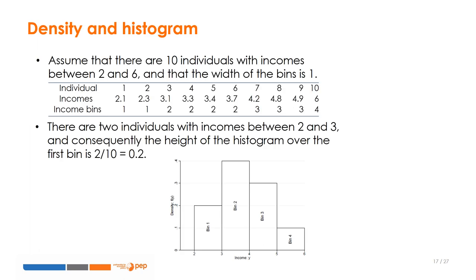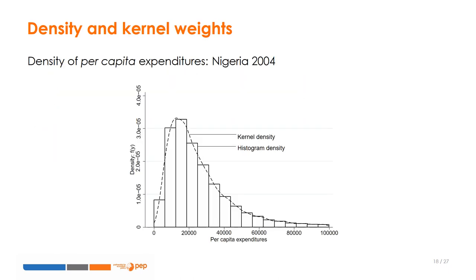The density function is a helpful statistical tool to present the entire shape of the distribution of wellbeing. To introduce this function, we start by presenting a simple tool: the histogram. There are four individuals with incomes between 3 and 4, so the height of the histogram associated with the second bin is 4 divided by 10, equals 0.4. Let's see an application with per capita expenditures from Nigeria in 2004. The density function is simply a smooth representation of the histogram. It is equal to the proportion of the population with incomes between two successive bounds, where the width corresponds to the so-called bandwidth, which is predetermined — for instance, in the previous example it was set at 1.